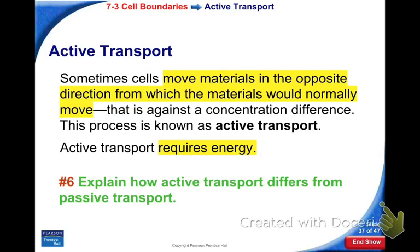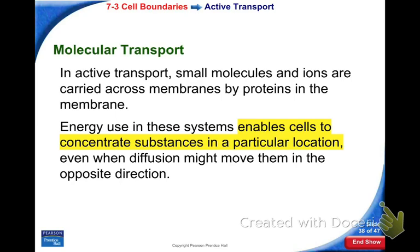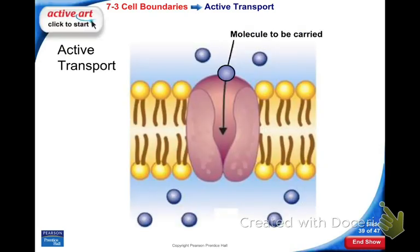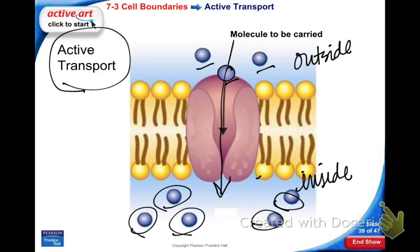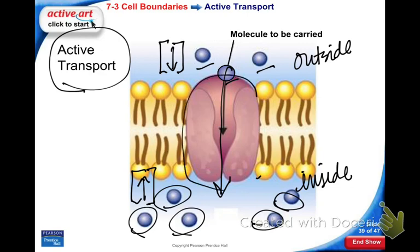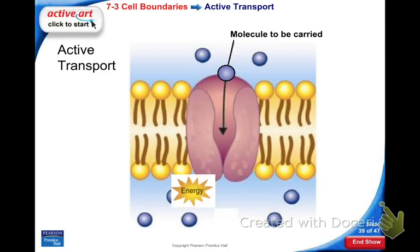How is active transport different from passive transport? In active transport we can move molecules to an area where they're needed, even though there might already be some there. We're going to use protein molecules in the cell membrane. Notice there are already 5 particles inside but only 3 outside, yet we're still pushing in — that's active transport, going from low to high concentration. ATP — the molecule of energy for a cell — opens these protein channels and allows the molecules to move through.